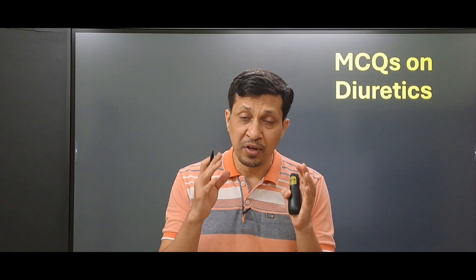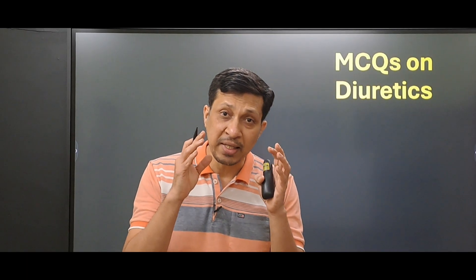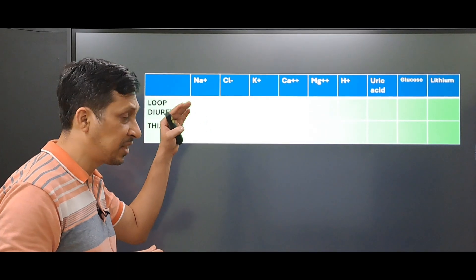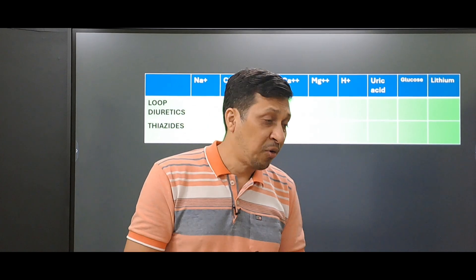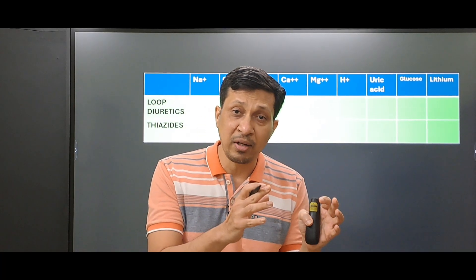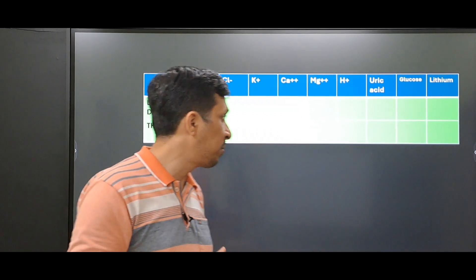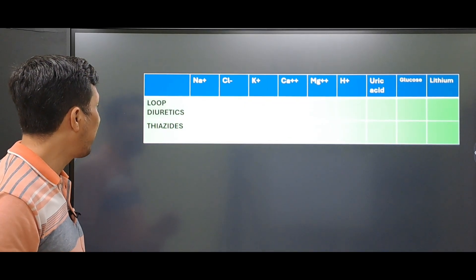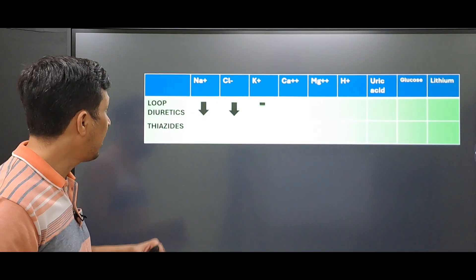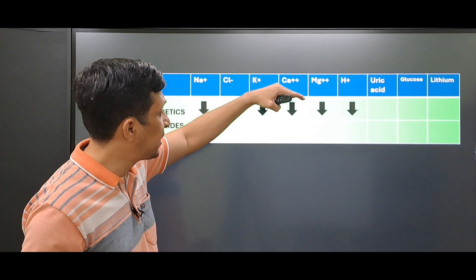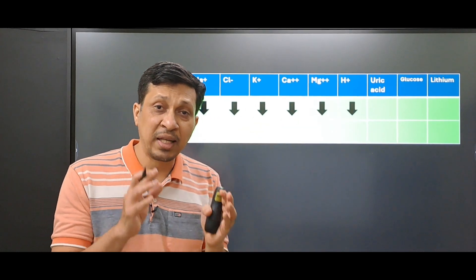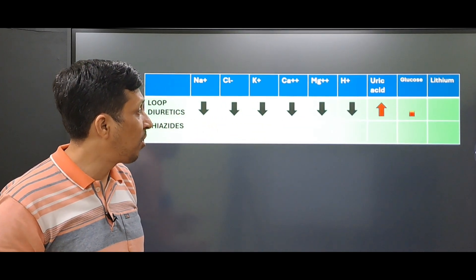Before solving the actual MCQs we must have some basics properly understood. This chart shows how the levels of different substances in the blood change when a patient is given a loop diuretic or a thiazide. When a loop diuretic is given, the levels of sodium, chloride, potassium, calcium, magnesium, and hydrogen ions all decrease in the blood, while uric acid, glucose, and lithium increase.